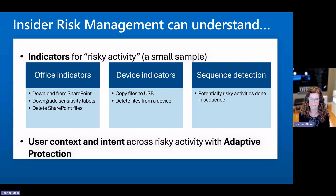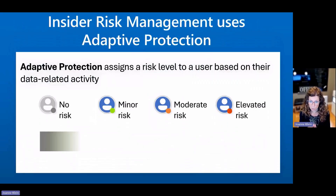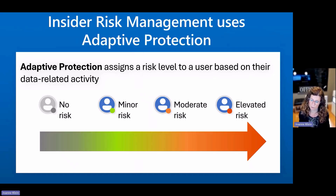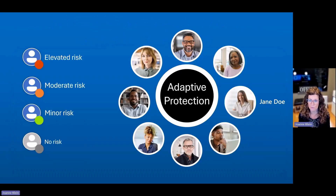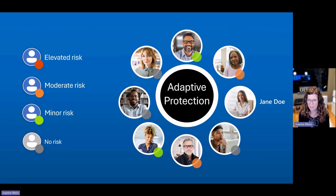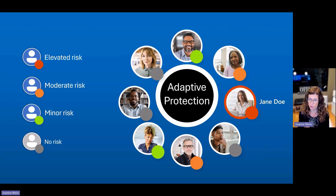Adaptive protection inside insider risk management really looks at the user context — in this case a departing employee — and the intent across all of the risky activity that's being done. Adaptive protection assigns a risk level to users based on this. In this graph you can see going from left to right: no risk, minor, moderate, and elevated, all based on the user context and the risky activity they may be doing. Jane Doe would more than likely be assigned an elevated risk level due to her activity. So knowing this, how can this help inform some of the other Purview controls to protect us against this insider risk?